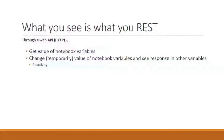We're calling this feature 'What You See Is What You REST.' Through a web API, it lets you either get the value of notebook variables as is, or — and this is more important — it lets you change temporarily the value of notebook variables and see the response that has in other variables defined in your notebook. It does so reactively, so if you update one cell in Pluto, that will have a cascading effect on other cells. We do the same thing, except on demand when HTTP requests to this API occur.